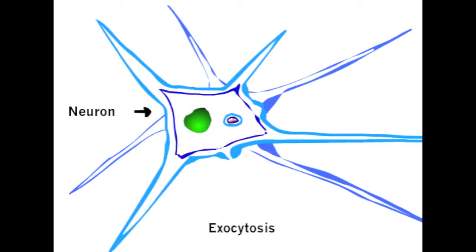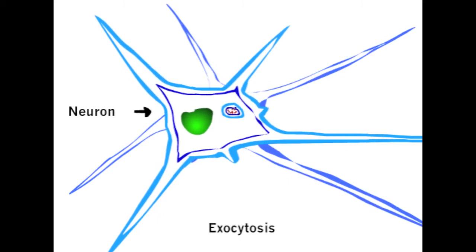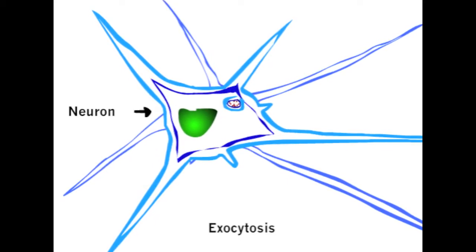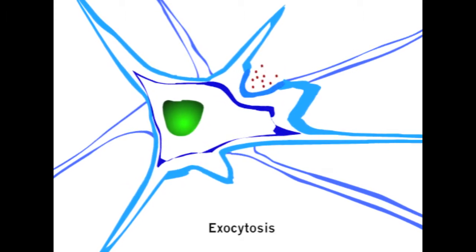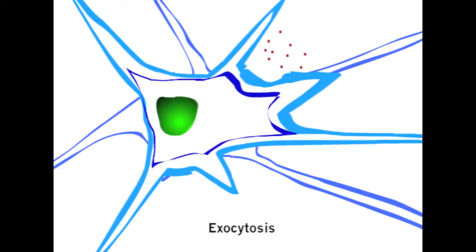The last part is exocytosis. This is when the cell gets rid of waste instead of getting something in. The nutrient molecules start inside the vesicle, which is inside the cell, and the vesicle slowly merges with the cell membrane.